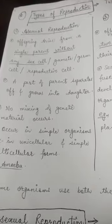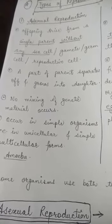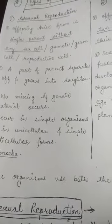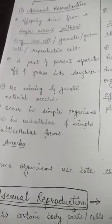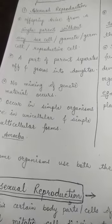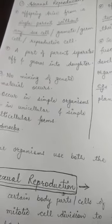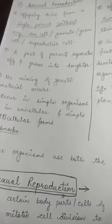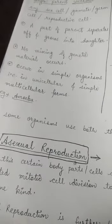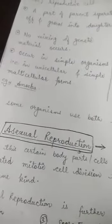First of all, the meaning of asexual reproduction: offspring arise from a single parent without any sex cell — gametes, germ cell, and reproductive cell. These are all different names representing the same thing. Male have male reproductive cell and female have female reproductive cell. Male sex cell is called testes and female sex cell is called ovum. A part of the parent separates off and grows into daughters. No mixing of genetic materials occurs. It occurs in single organisms — unicellular and simple multicellular forms — like amoeba, paramecium, etc.